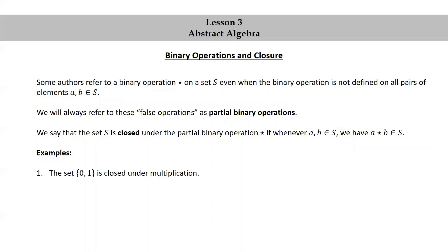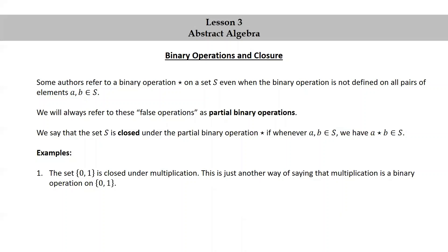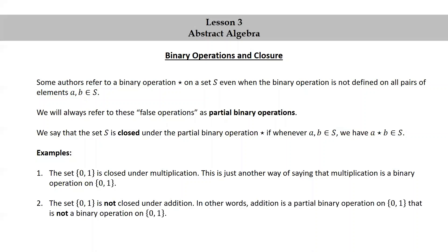Let's look at some examples. The set consisting of 0 and 1 is closed under multiplication. This is just another way of saying that multiplication is a binary operation on the set consisting of 0 and 1. The set {0, 1} is not closed under addition — in other words, addition is a partial binary operation on {0, 1} that is not a binary operation on {0, 1}.